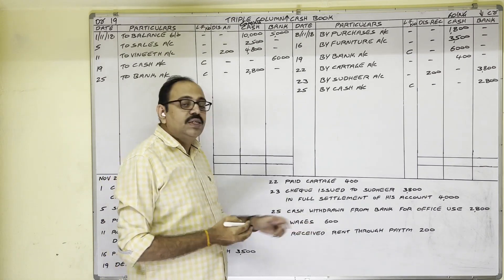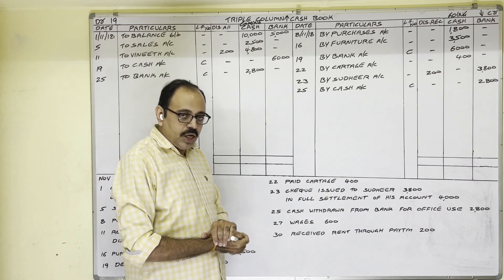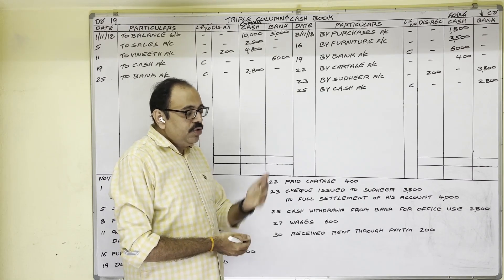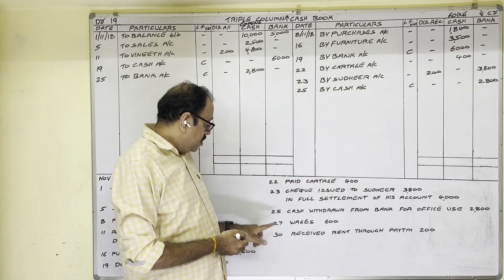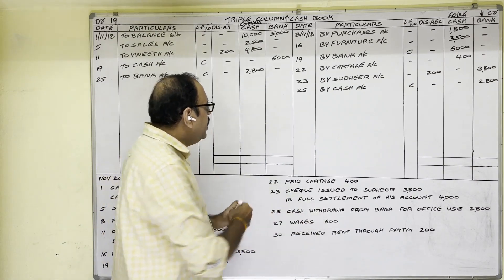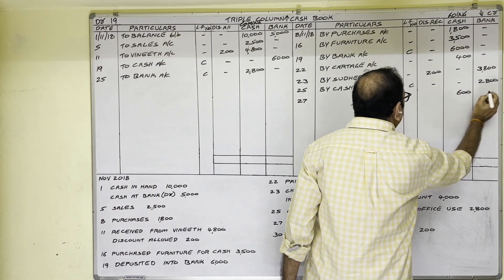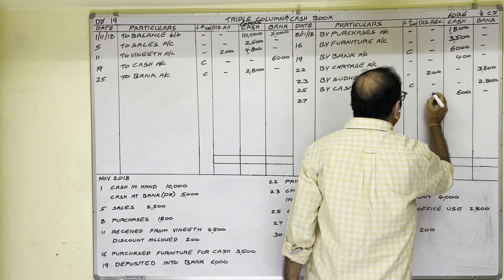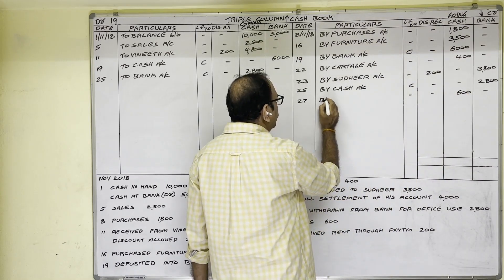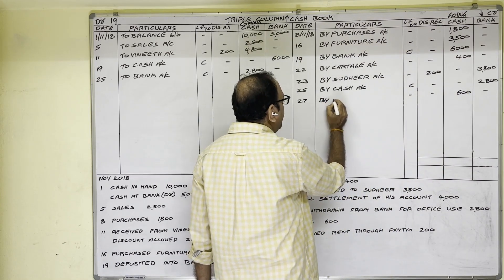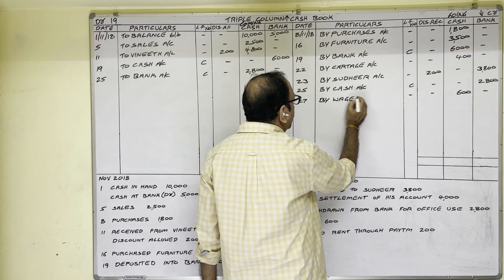27th November: Wages 600 rupees. We paid wages to labour, so cash is going out from the firm — credit side cash column, 27th date, 600 rupees in the cash column. Write the expenditure name: 'By Wages account'.